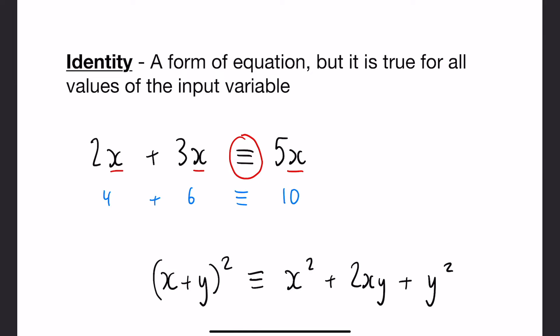And this will be the case with all of them because if you take a number, multiply it by 2, and add 3 lots of that number it's always going to make 5 lots of that number.